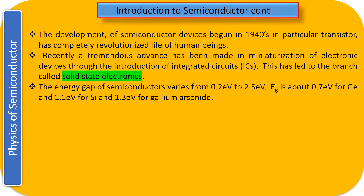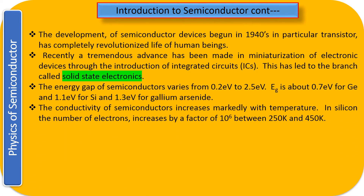The development of semiconductor devices began in 1914. In particular, the transistor was a very important device discovered in the 1940s, which really changed human lives. All electronic devices use integrated circuits (IC circuits), and the component of the IC circuit is the transistor. There was a race to build the smallest IC circuit, which required making the smallest transistor — increasing the number of transistors increases processing speed. This led to a separate branch called solid state electronics.